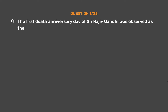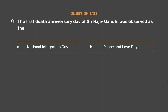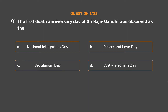Question No. 1. The first death anniversary day of Sri Rajiv Gandhi was observed as: Option A, National Integration Day; Option B, Peace and Love Day; Option C, Secularism Day; Option D, Anti-Terrorism Day. The correct answer is Option D, Anti-Terrorism Day.